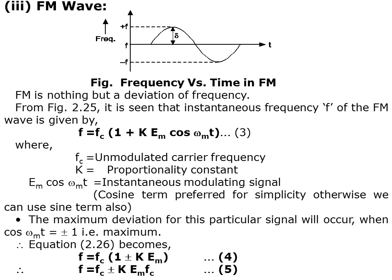Looking at the frequency modulation wave, a figure shows frequency versus time in frequency modulation. Frequency modulation is nothing but a deviation of frequency — only the frequency changes. The instantaneous frequency F of the FM wave is given by F equals F_C times (1 + K·E_M·cos(ω_M·t)), where F_C is the unmodulated carrier frequency and K is the proportionality constant.